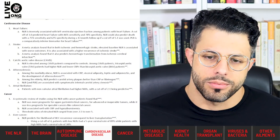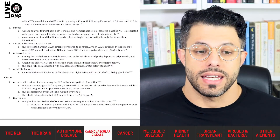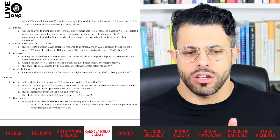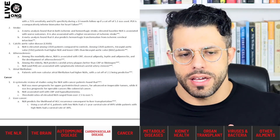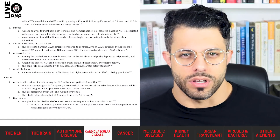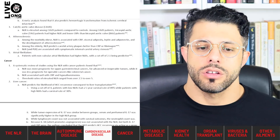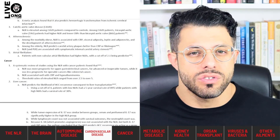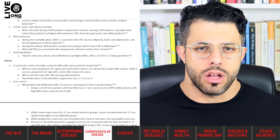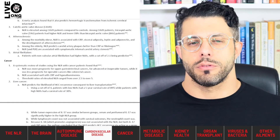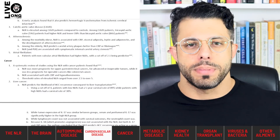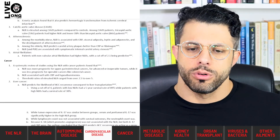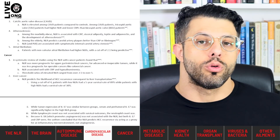In calcific aortic valve disease, the NLR is predictive, with TAV patients showing higher NLRs and lower CRP than BAV patients. Among the morbidly obese, the NLR associates with atherosclerosis development, and among the elderly it predicts carotid artery plaques better than C-reactive protein or fibrinogen — which is remarkable, since lipidologists rarely mention this ratio. Certain kinds of atrial fibrillation are also associated with elevated NLRs, with a cutoff of 2.1 being predictive.